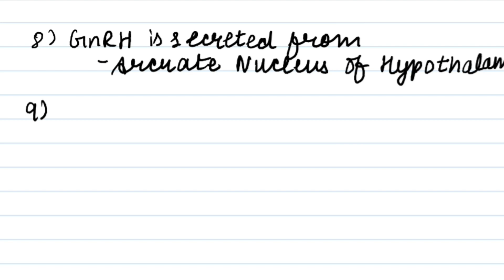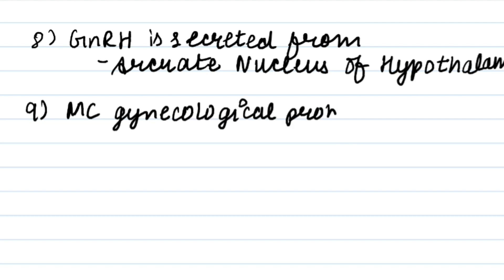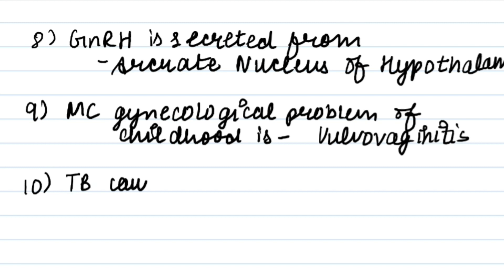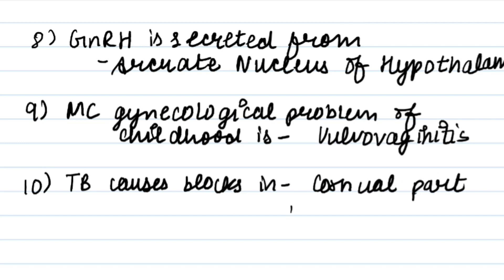The most common gynecological problem of childhood is vulvovaginitis. Next point: TB causes a block in the cornual part of the uterus. The most common cause of secondary dysmenorrhea is endometriosis.